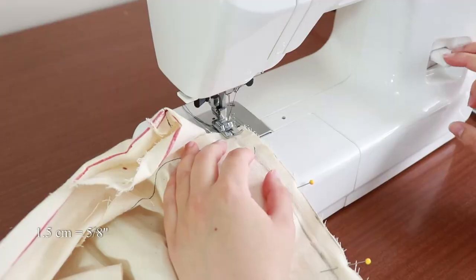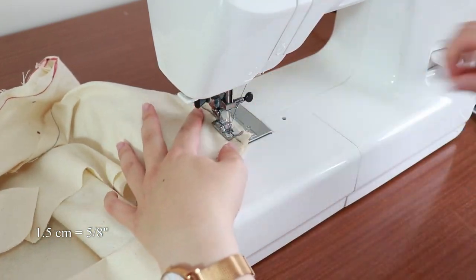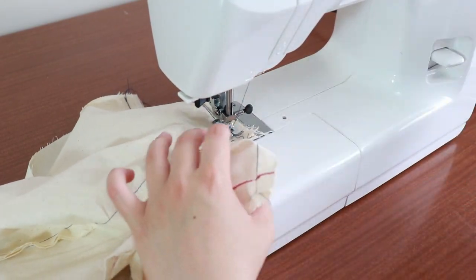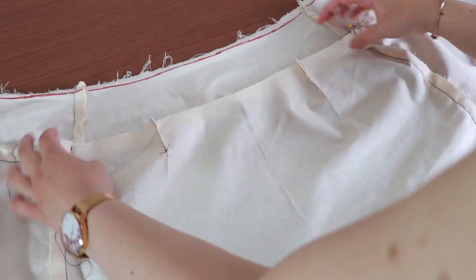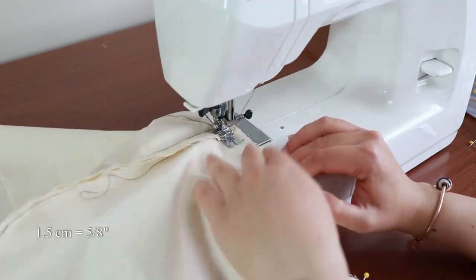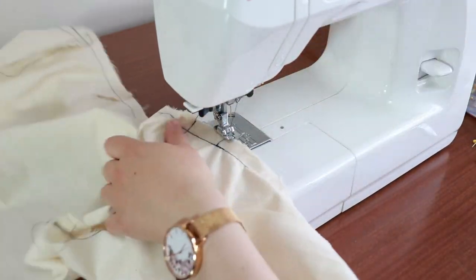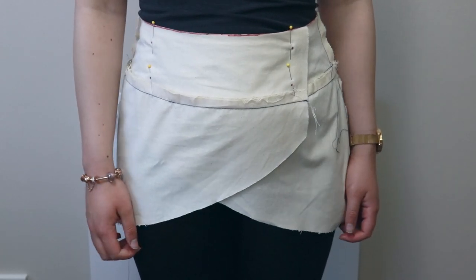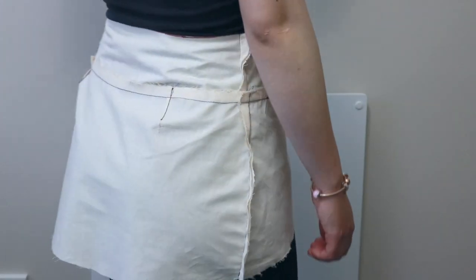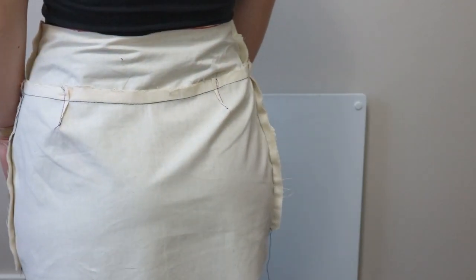Pin the top edge of piece 2 to the waistband. Sew together at 1.5 cm. I'm happy with how the second toile fits. There's no bagginess in the back and the drag lines in the front have been eliminated. It still has enough space so that I can tuck in the shirt into this skirt. So now I'll copy off all the fitting adjustments that I made to the pattern.